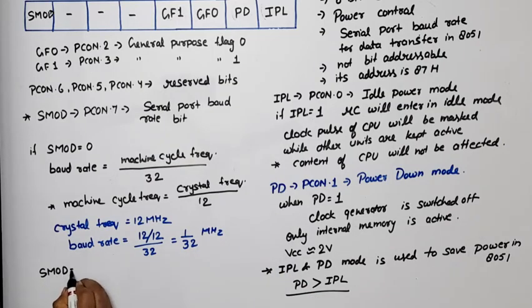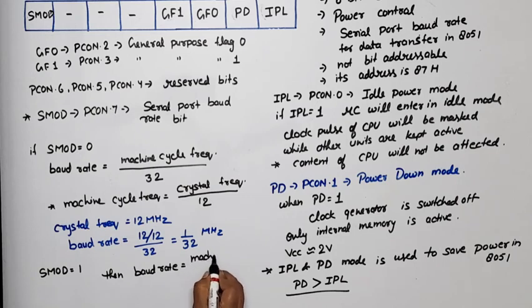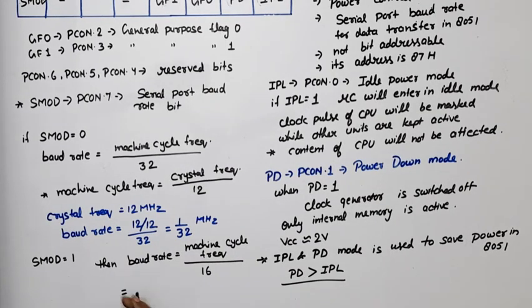Now when SMOD is equal to 1, then baud rate is equal to machine cycle frequency divided by 16. And if we put values, what will happen? For same 12 by 12, this is the machine cycle frequency divided by 16, means 1 by 16 megahertz, which is double of this. Means in this case baud rate is double.